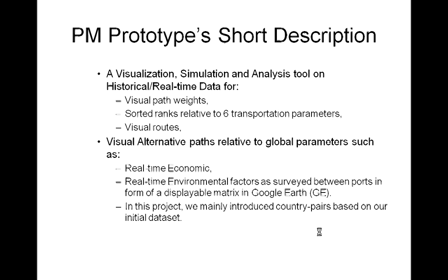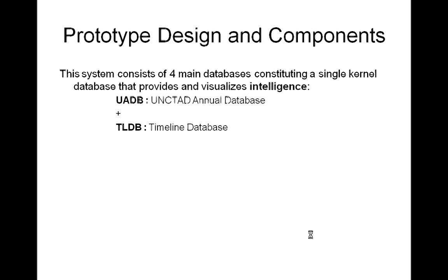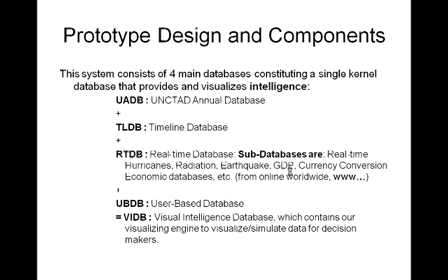These are surveyed between ports in the form of displayable metrics in Google Earth. We mainly introduce country pairs based on the initial dataset. The system consists of four main databases constituting a single kernel database that provides and visualizes the intelligence: the UNCTAD annual database (UADB), a timeline database (TLDB), a real-time database including sub-databases such as real-time hurricane, radiation, earthquake, GDP, currency conversion, and economic databases linked to the internet, and finally a user-based database. Together these four databases constitute the visual intelligence database (VIDB).